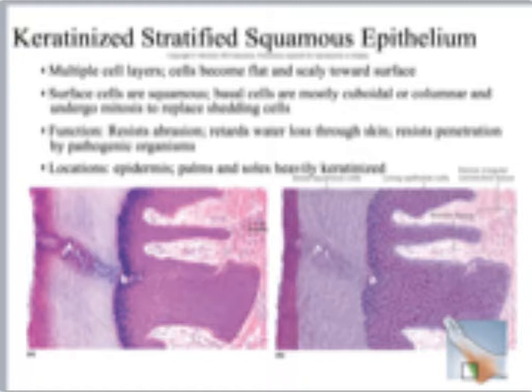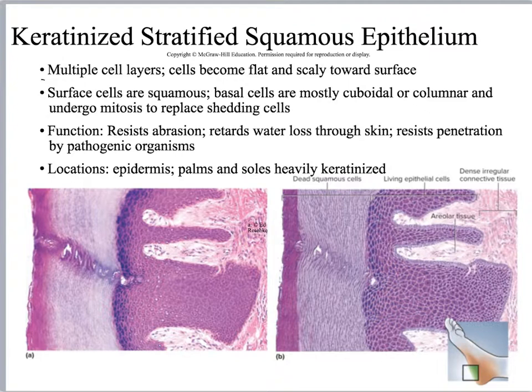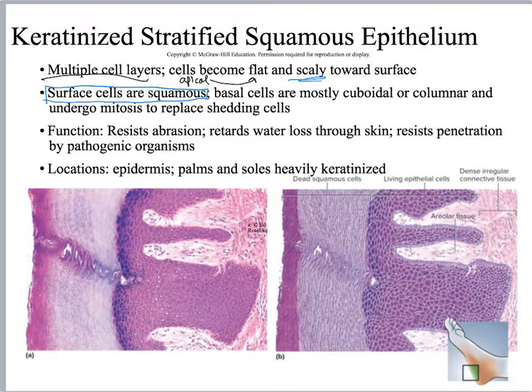First, let's look at stratified squamous epithelium. Your book is going to potentially distinguish between keratinized versus non-keratinized. Stratified means multiple rows of cells. The apical cells are going to eventually become flat and they're kind of scaly, so the surface scales which are flat are squamous. The basal cells are going through mitosis in order to create more copies of themselves, so the basal cells are going to be cuboidal or columnar in shape.